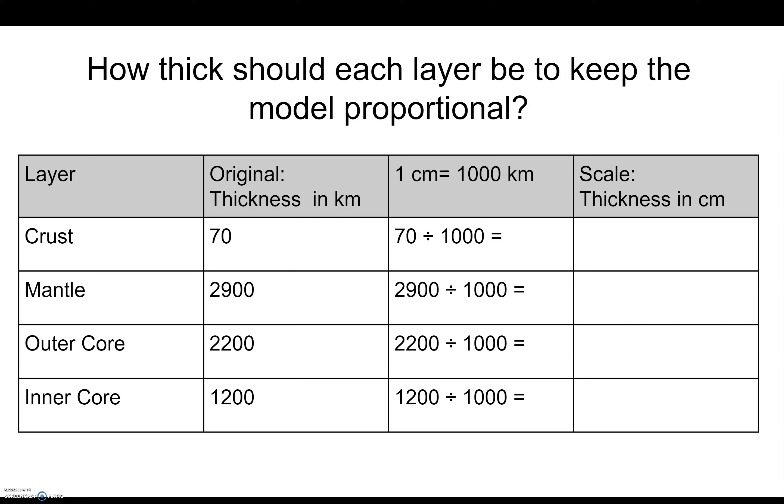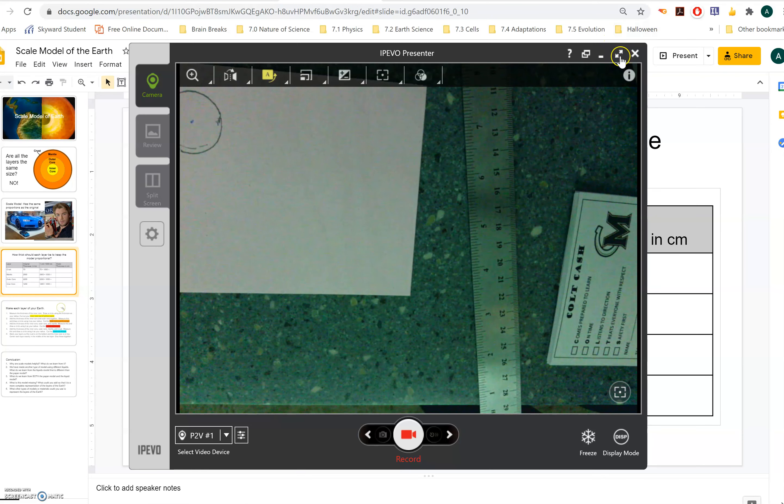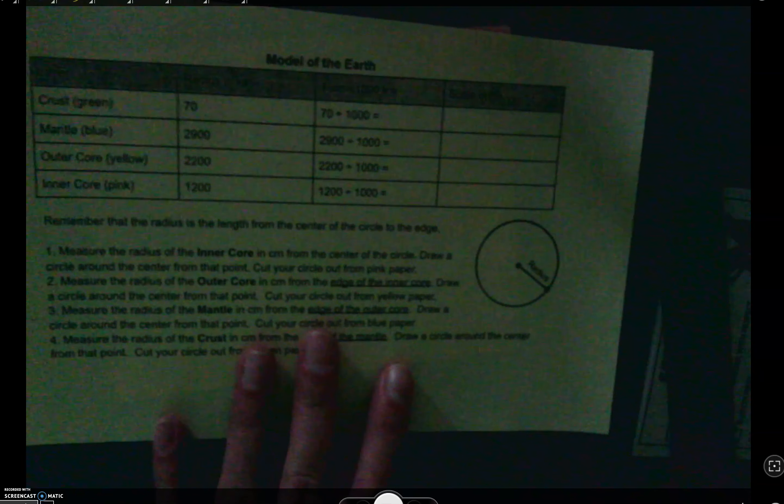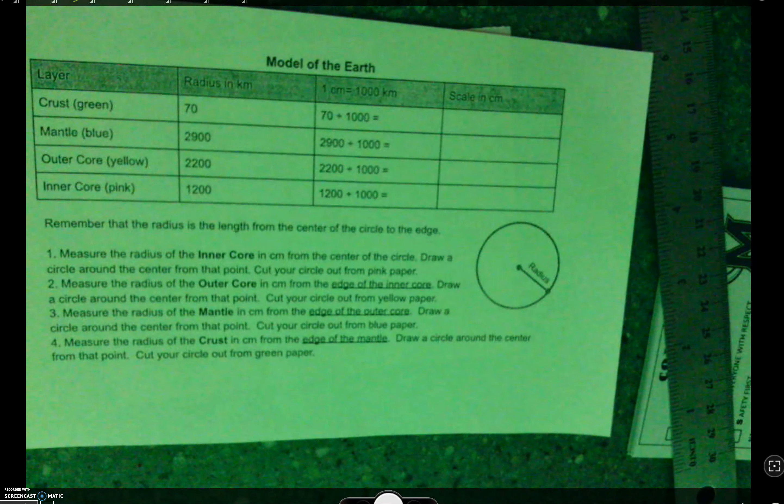We have to do a little bit of math to figure that out, and that's what your tan paper is for. So I love that Vivian already wrote her name on her tan paper. That's awesome. Will you write your name on there as well? So we've got the original thickness of the layers of the earth in kilometers, and we have to divide it by 1,000 so that 1 centimeter on our model is going to be the same as 1,000 kilometers in real life. So let me switch over to my camera so that I can do the math with you guys. So here's your tan paper. Go ahead and write your first and last name on there. So for the crust, we need to do 70, because 70 kilometers is the actual thickness of the crust, right? Divide it by 1,000.